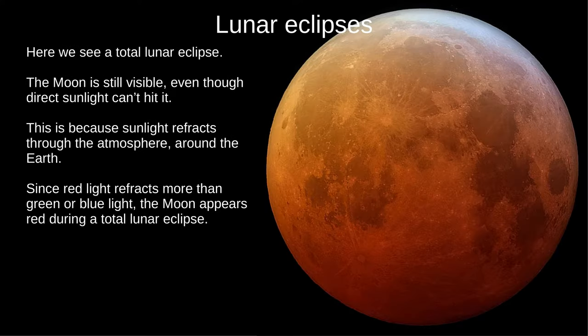Here we have a total lunar eclipse, sometimes called a blood moon. Our atmosphere refracts light around the Earth, so some light still gets through. Red light refracts more than the other colours, and the Moon gets a blood-red appearance.